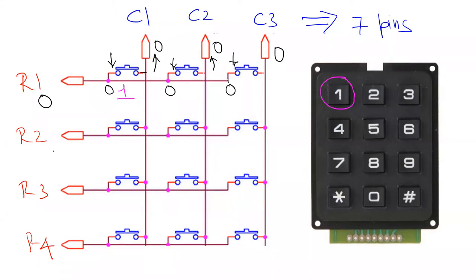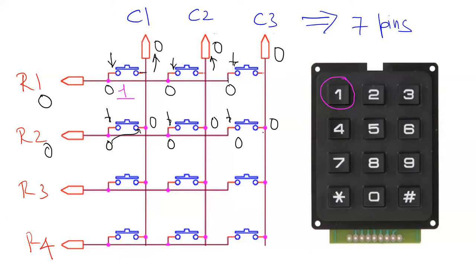Similarly, when you put a logic on row 2, the same logic is available at columns 1, 2, and 3 whenever a key in that row is pressed. That logic is communicated to column 1, column 2, and column 3 as well. This is what we do by means of keypad scanning.